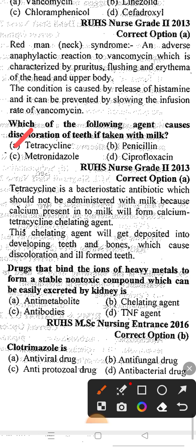The next question: a drug that binds the iron of heavy metals to form a stable non-toxic compound which can be easily excreted by the kidney is — Option A: anti-metabolic, Option B: chelating agent, Option C: antibodies, Option D: TNF agent. The correct answer is option B, chelating agent.